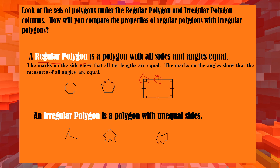Now, what is an irregular polygon? An irregular polygon is a polygon with unequal sides. In this example, the sides are not equal — they don't have equal sides. These are called irregular polygons. Is that clear?